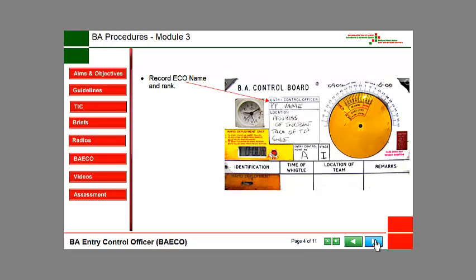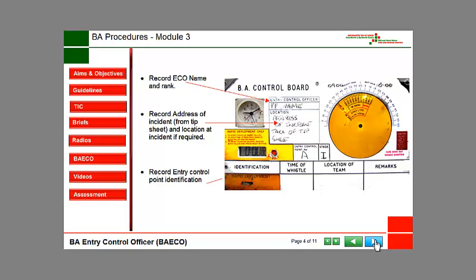Record the Entry Control Officer name and rank. Record the address of the incident from the tip sheet, and the location at the incident if required. Record the Entry Control Point identification.